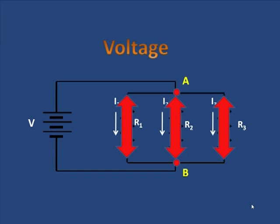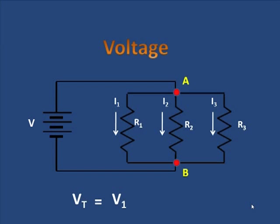So we can say that in any parallel circuit, the voltage across any of the paths is equal to each other. Vt equals V1, which equals V2, which equals V3.